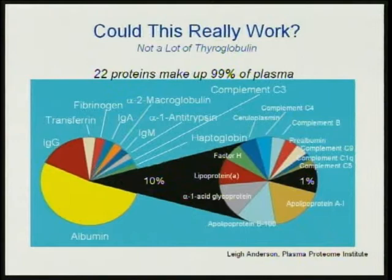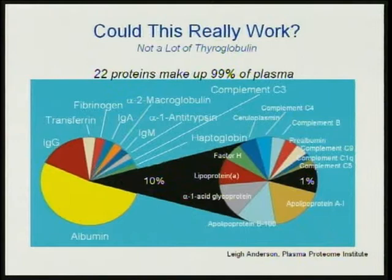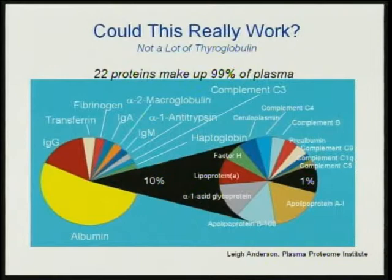Could this really work? There's not a lot of thyroglobulin in plasma. Lee Anderson, who heads up the Plasma Proteome Institute, reminds us that 22 proteins make up 99% of plasma. For every one peptide I'm going to make when I digest serum from thyroglobulin, there are 40 million peptides from albumin. So we have to find the needle in a needle stack — it's not hay, it's needles.